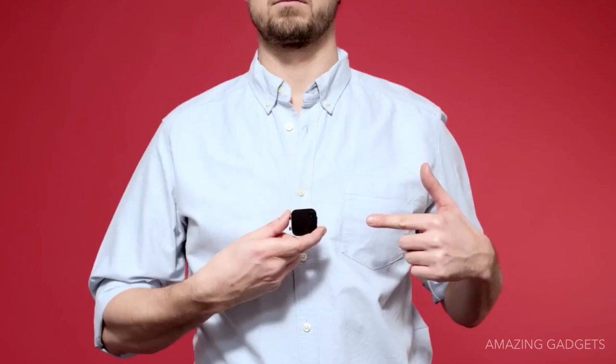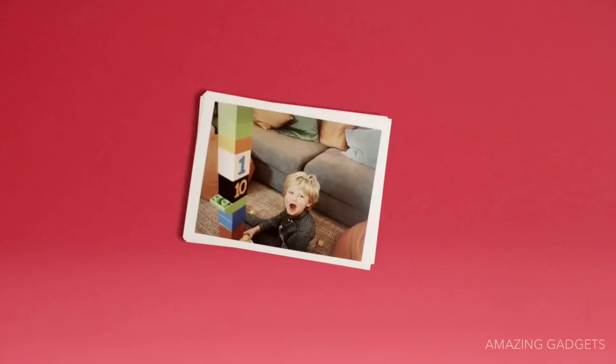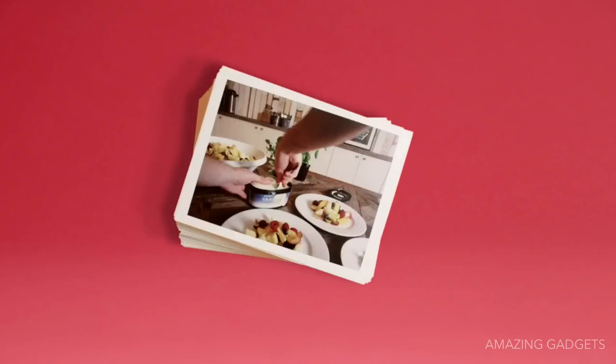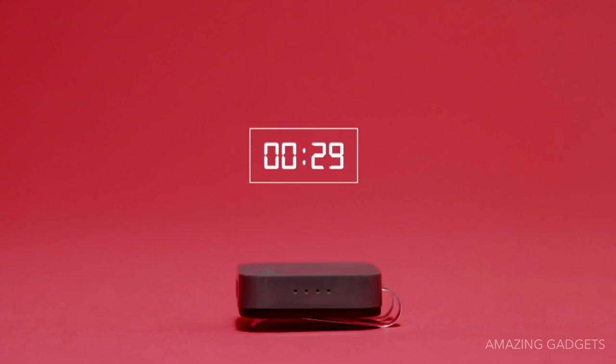This is the Narrative Clip, a wearable 5-megapixel camera and GPS that lets you capture all of life's moments. How? It takes a photo every 30 seconds.